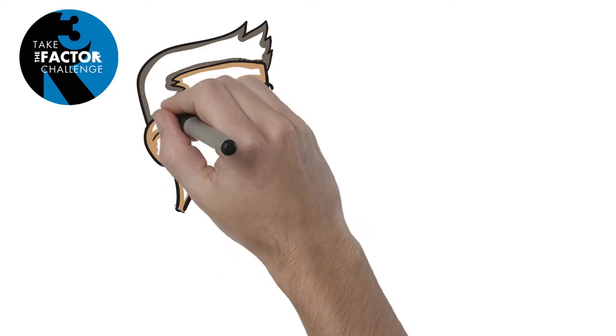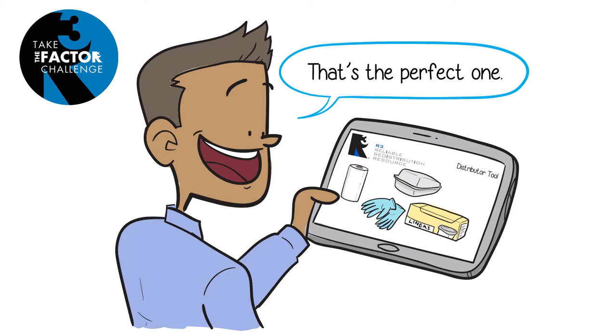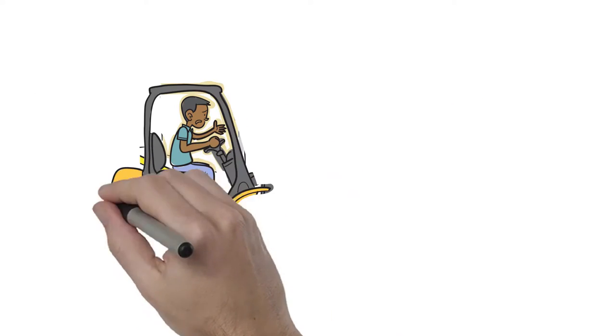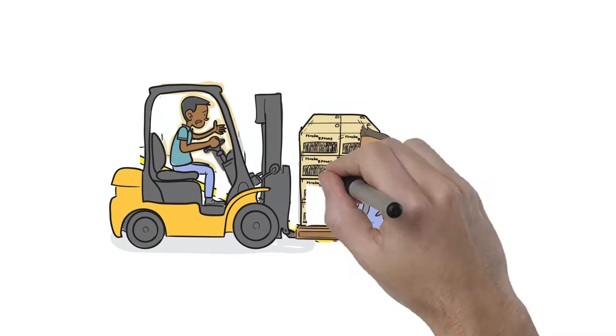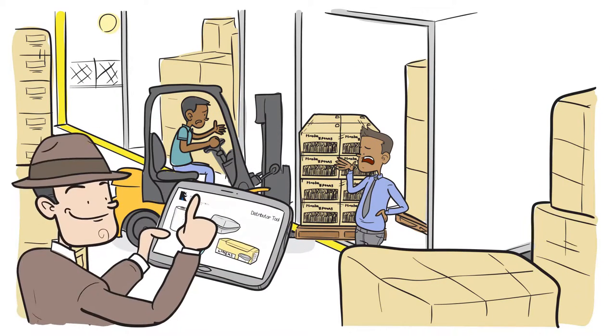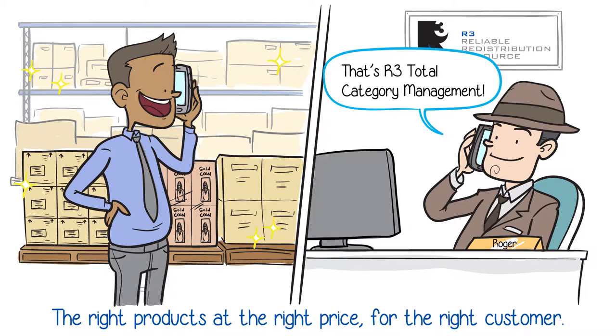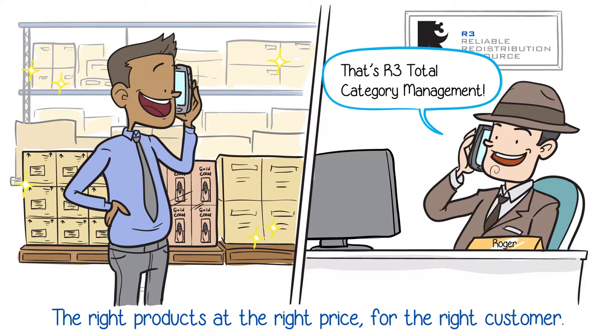When R3 comes in and uses the R3 factor challenge we can identify the areas where operations can be streamlined. What would it look like if your company could get the disposable products you need without the hassles of them crowding your warehouse? What if you had a redistribution partner to handle it for you? The answer is different for every company and so R3 customizes the solution to provide the right products at the right price for the right customer.